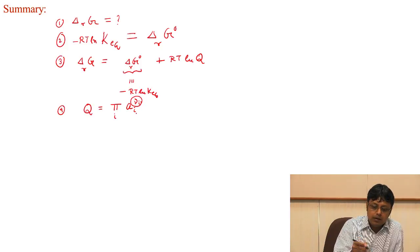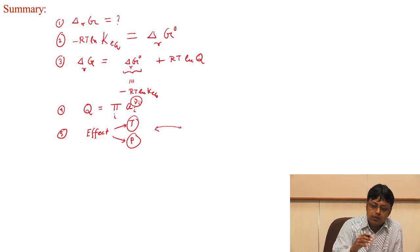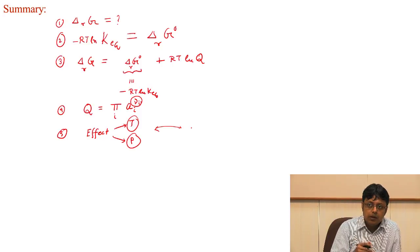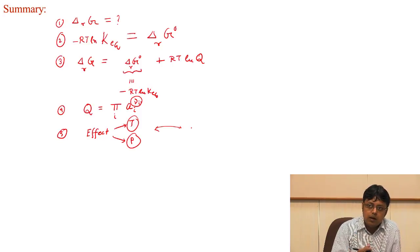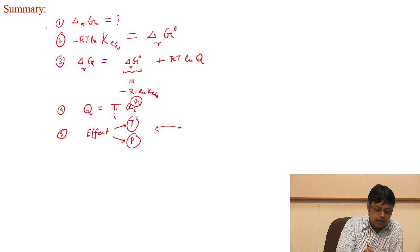We also discussed the effects of external agents such as temperature and pressure on the equilibrium constant. This explains how a system always tries to counteract an imposed change, which is Le Chatelier's principle — and we explained the thermodynamic basis for it. We showed how varying pressure changes the degree of dissociation, and how varying temperature controls endothermic and exothermic reactions.